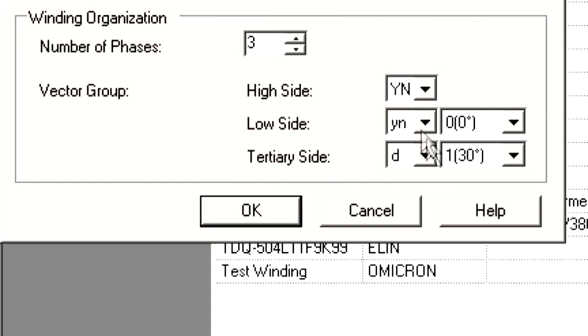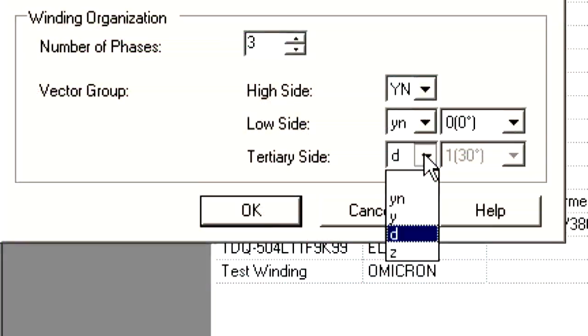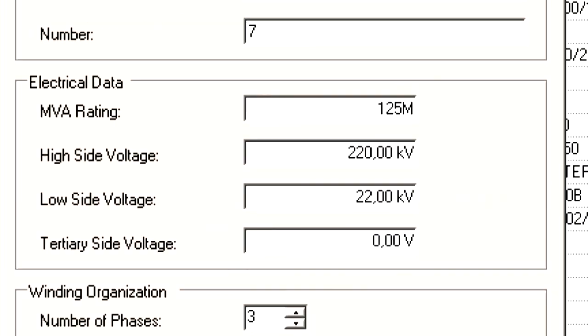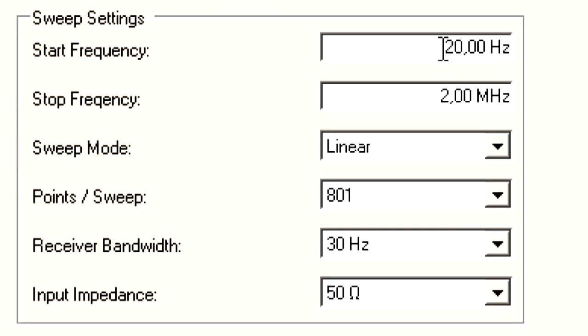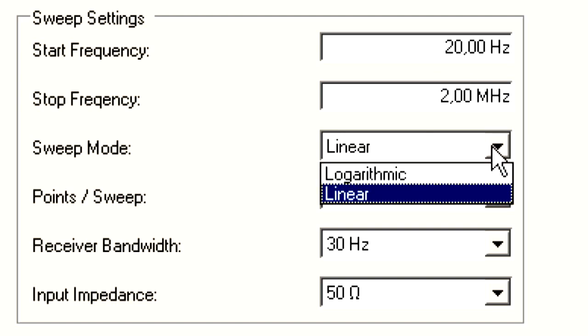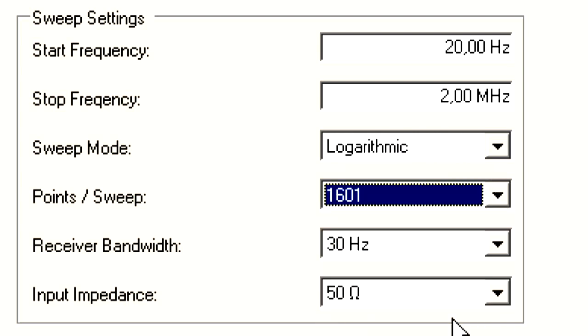The Franalyzer software keeps a record of all relevant data of the transformer such as the winding vector groups, the MVA rating, and the serial number. Test parameters include start and end frequency and the transfer functions to be recorded. Measurements can be recorded using linear or logarithmic scaling for better placement of measurement points.